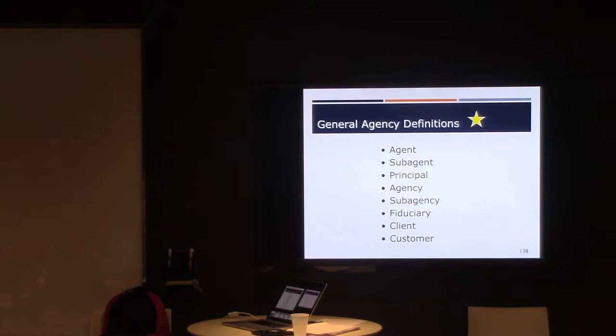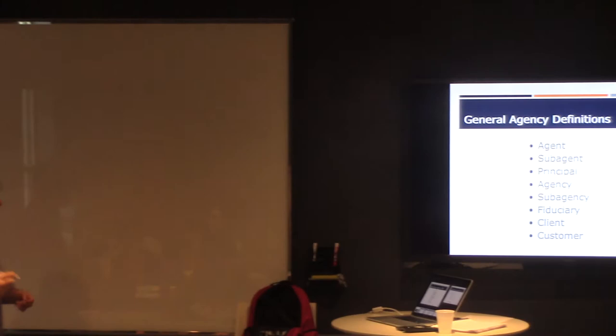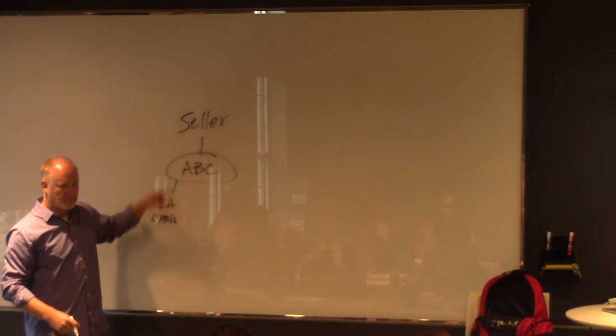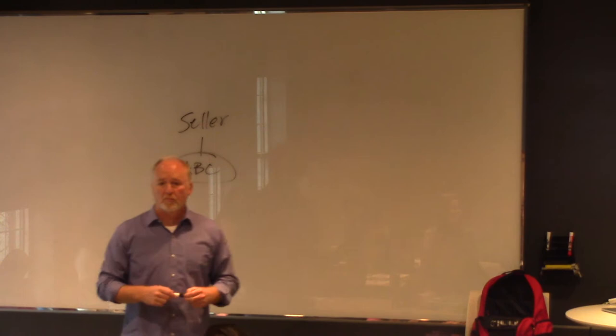ABC is the agent. Right? Now, obviously, I'm the one who took the listing and I'm going to get paid. So let's call Chris a sub-agent. Why am I a sub-agent? Because I am an agent of the agent. So far, so good?